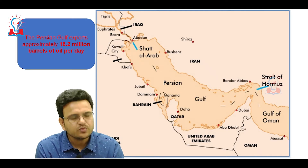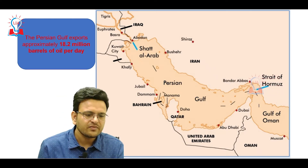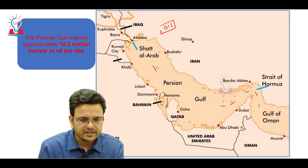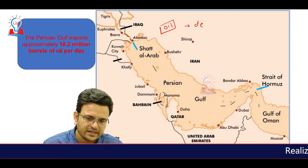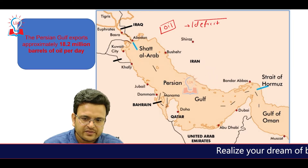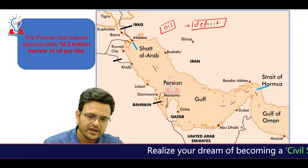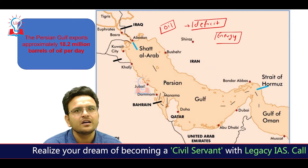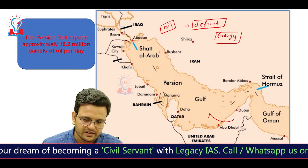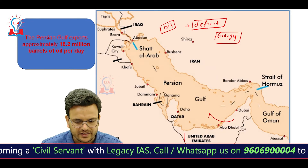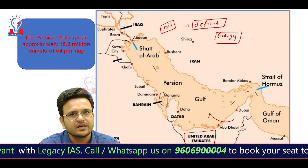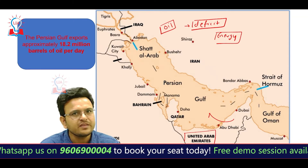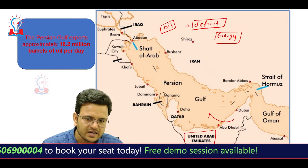First of all, we have to see the Persian Gulf. This Persian Gulf is very important for oil, and we know that India is an oil-deficit country. Oil is very important for energy. So to ensure our energy security, India mostly relies on these countries, among them UAE — United Arab Emirates. The entire Gulf region is very important for India to ensure energy security.